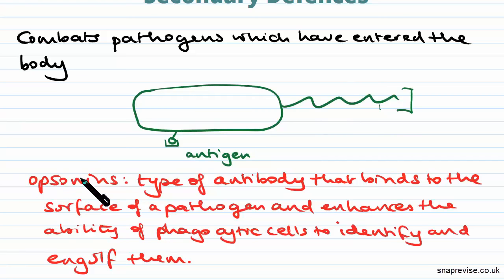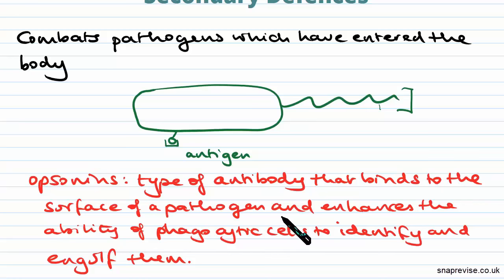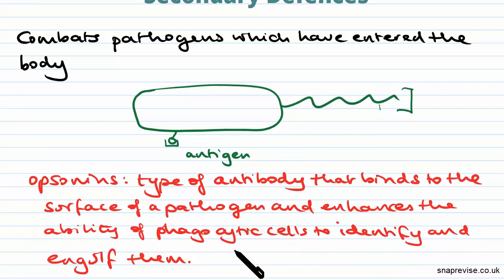Some antibodies are opsonins. Opsonins are generally defined as types of antibodies that bind to the surface of a pathogen and enhance the ability of phagocytic cells to identify and engulf that pathogen.